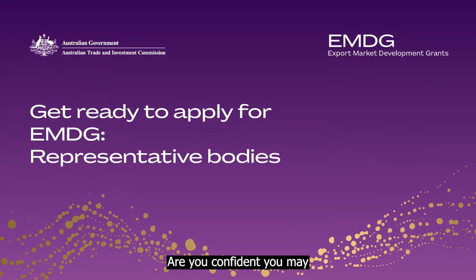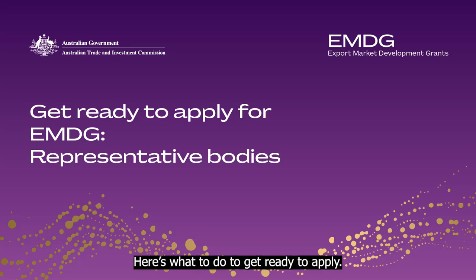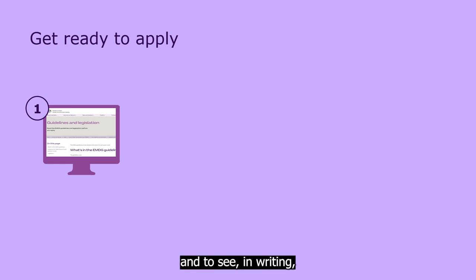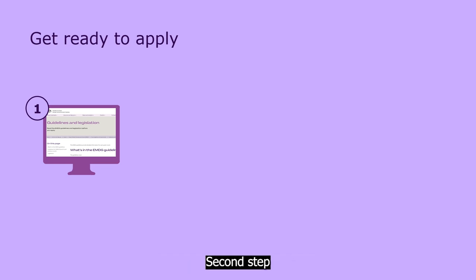Are you confident you may be eligible for a representative body grant? Here's what to do to get ready to apply. First step, read the grant guidelines. Use them to reconfirm your eligibility and to see, in writing, what you need to get together for your application.